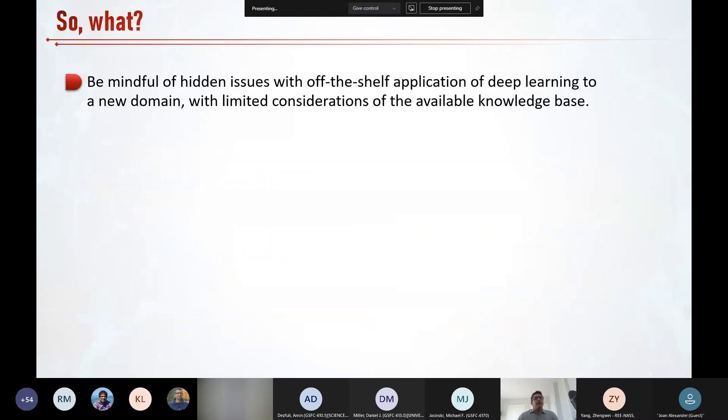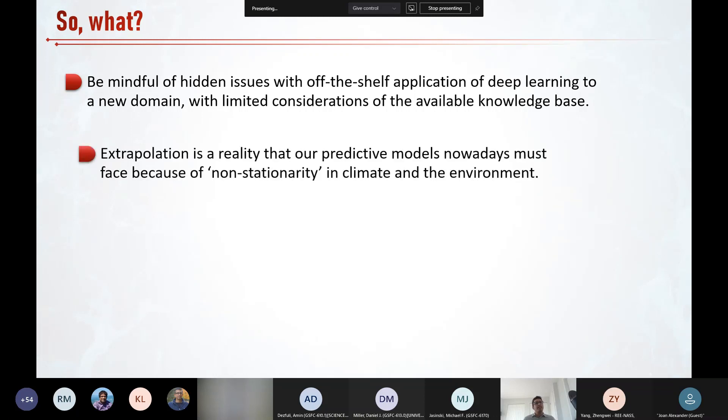So, what I'm trying to get at is, and this is my last slide, there might be hidden issues with any off-the-shelf application of deep learning techniques that have been largely developed by mathematicians and computer scientists to problems in a new domain with no or limited considerations of the available domain's knowledge base. I think we certainly deal with a different set of issues that computer scientists do. For example, in image recognition, big extrapolation is our reality in Earth and environmental sciences that many predictive models nowadays must face because of non-stationarity in climate and the environment.